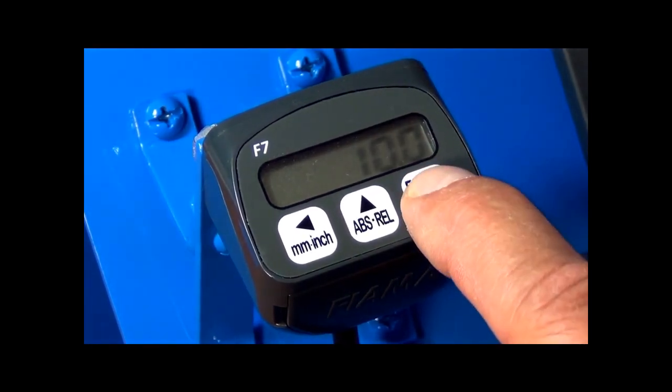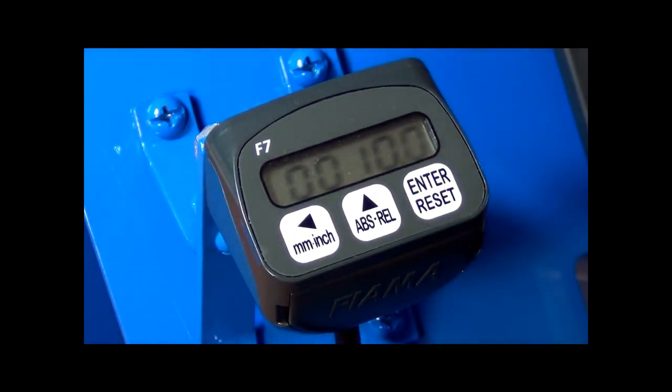Depress the ENTER key twice, once to initiate the programming of the parameter, the second to enter the program mode where the least significant digit of the desired count is ready to be entered.